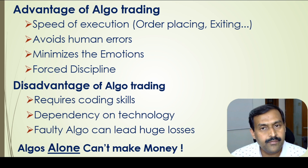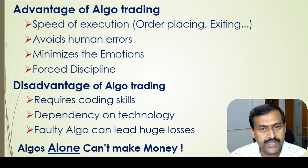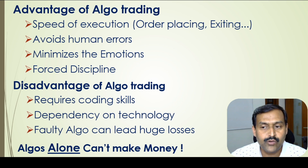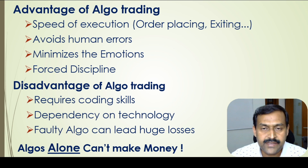Discipline is a very important factor to be a successful trader. The disadvantages of algo trading are that it requires coding skills — though you can hire someone to do the coding or develop the algo for you. There is always a dependency on technology such as cloud if you are deploying there, or a dependency on someone if you are outsourcing. Please note that a faulty algo can lead to huge losses. It is very important that the algo needs to be very robust.